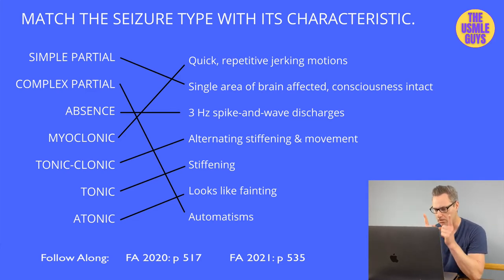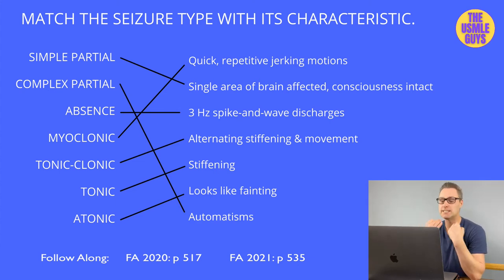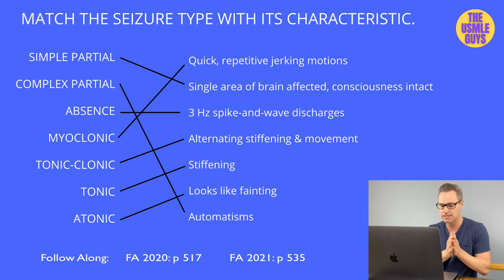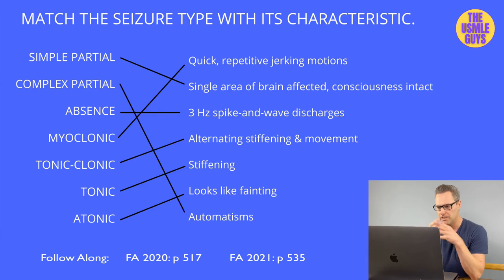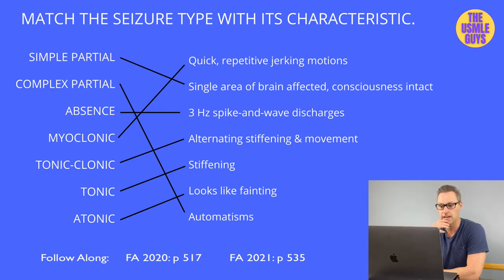Don't forget two important terms: epilepsy and status epilepticus. Epilepsy is a disorder whereby someone experiences recurring unprovoked seizures. Status epilepticus is a condition where someone has either an ongoing seizure lasting longer than five minutes, or recurring non-stop seizures likely to result in CNS injury. The first time seeing a patient in status epilepticus can be very frightening and traumatizing.